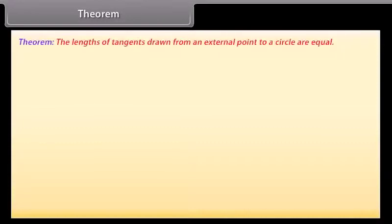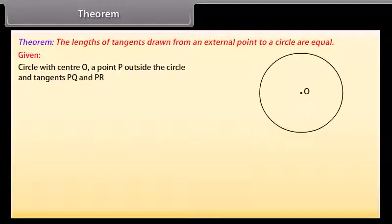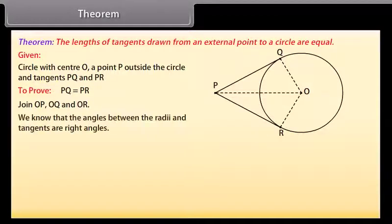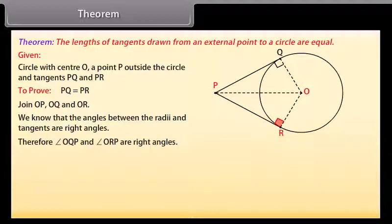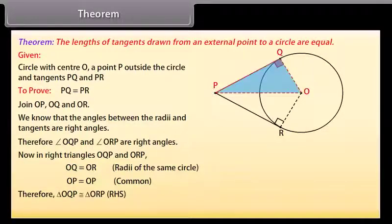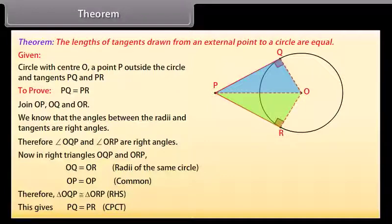Theorem: The lengths of tangents drawn from an external point to a circle are equal. We are given a circle with centre O, a point P lying outside the circle, and two tangents PQ and PR on the circle from P. We need to prove that PQ is equal to PR. Join OP, OQ and OR. The angles between the radii and tangents are right angles, therefore angle OQP and angle ORP are right angles. In right triangles OQP and ORP: OQ equals OR because these are radii of the same circle, and OP equals OP (common). Therefore by RHS congruence rule, triangle OQP is congruent to triangle ORP. This gives PQ equals PR, since corresponding parts of congruent triangles are equal.